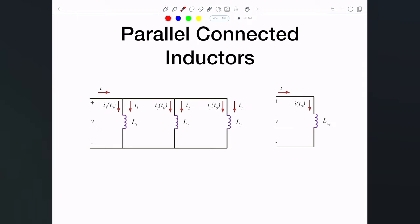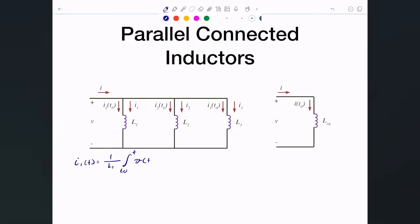The total current i(t) is split: L1 has its own current, L2 its own, and L3 its own, and each also has its own initial current. Our task is to figure out how L1, L2, L3 relate to L_equivalent. We know they all share the same voltage V, and the currents are different.